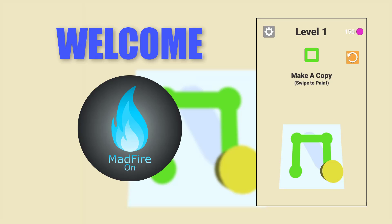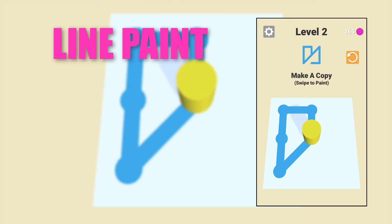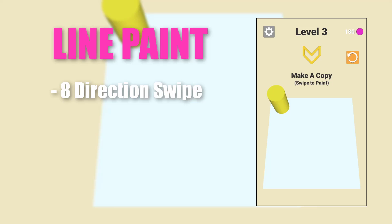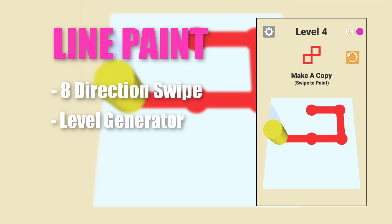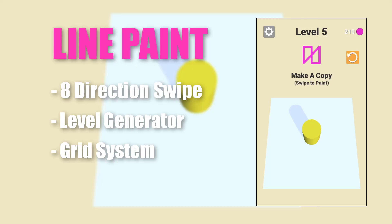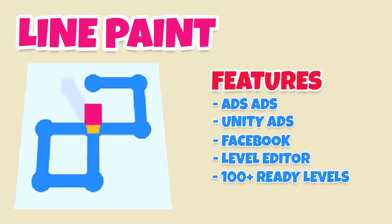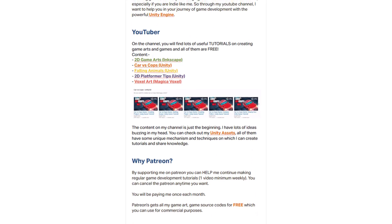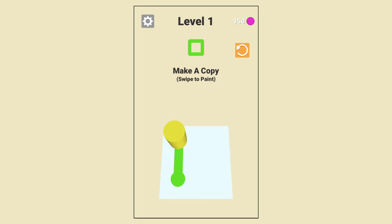Hello guys and welcome back to the channel. In this tutorial series we are going to create a simple puzzle game. We will cover eight-direction swipe control to move our player, level generation from level data, a grid system, and many more things. The entire project is available on GitHub — the link will be in the description. A premium version with extra features like Unity Ads, a level editor, and 100+ ready-to-go levels is available on my Patreon page. So without any further delay, let's get started.